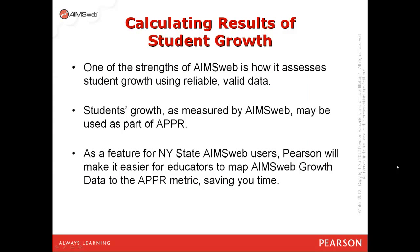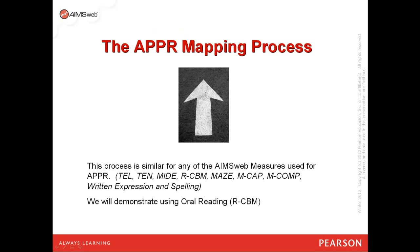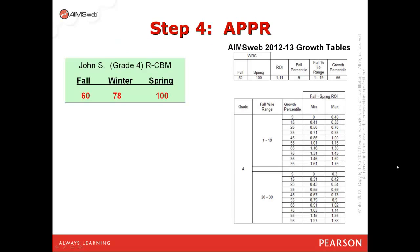Now that you have results from your AIMSLab measures, one of the strengths of AIMSLab is how it assesses student growth using reliable, valid data. Students' growth, as measured by AIMSLab, may be used as part of APPR. As a feature for New York State users, Pearson will make it easier for educators to map AIMSLab growth data to the APPR metric. The mapping process is similar for any AIMSLab measure used for APPR. We'll demonstrate using the oral reading measure, looking at a student's growth from fall to spring.